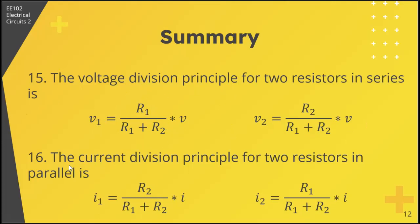Sixteenth, the current division principle for two resistors in parallel is: I1 equals R2 over R1 plus R2 times I, and I2 equals R1 over R1 plus R2 times I. This shows that for current division, if you have a large resistance value, the current that goes through that resistor is smaller.